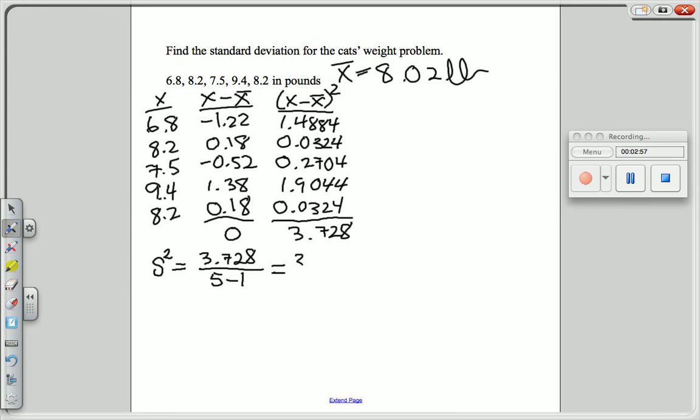When you divide this by 4, you end up with the number 0.932. The units of this are pounds squared.